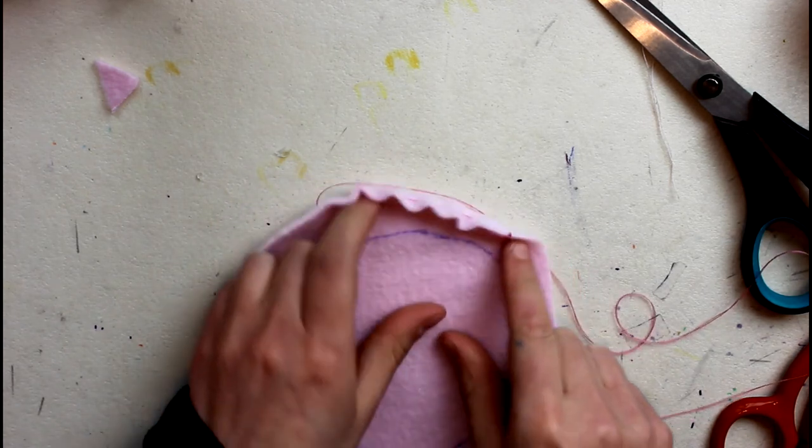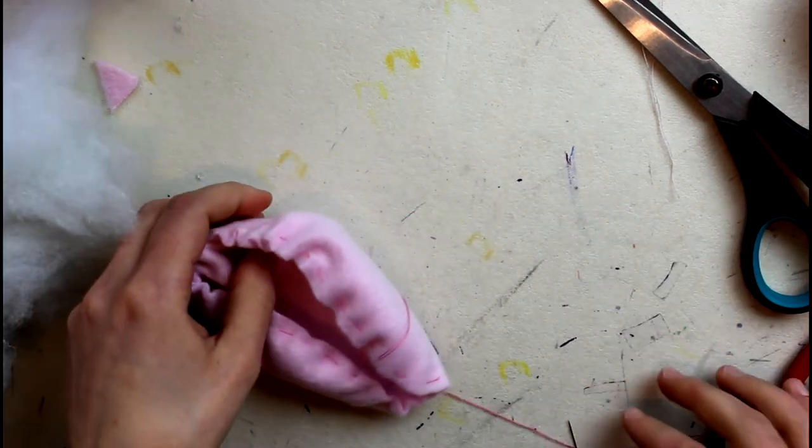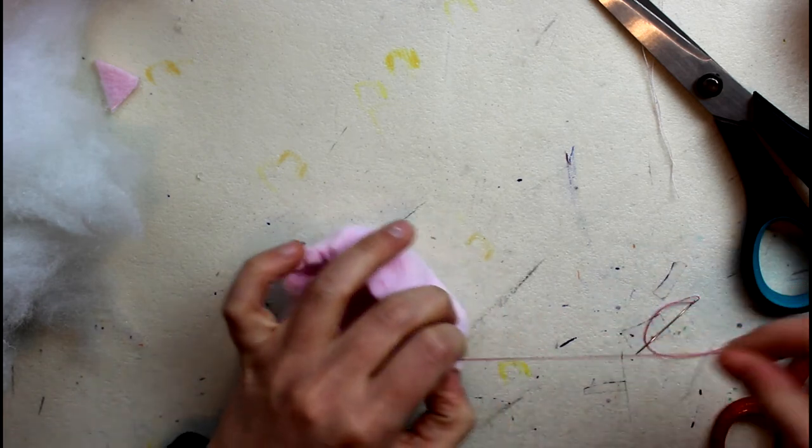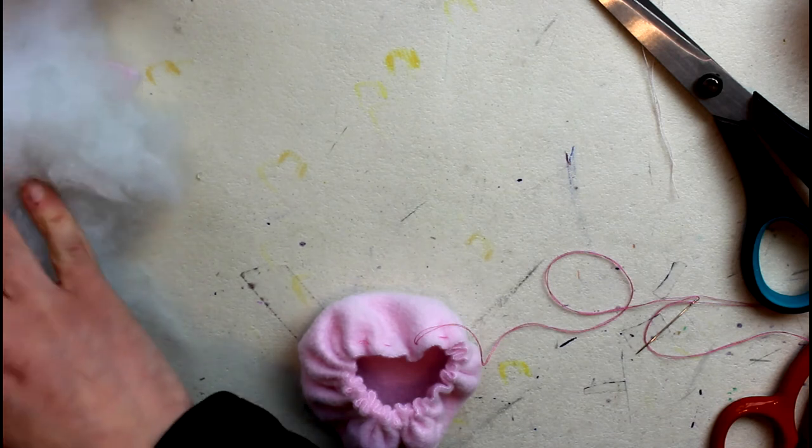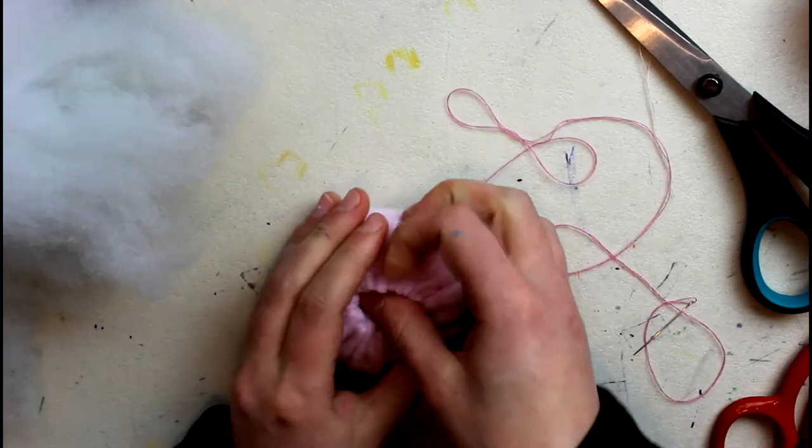Once you've gone all around your circle, start pulling your thread so it's going to start coming all together. This is just how you make a yo-yo flower, it's the same thing. But this time we're going to stuff it so it's going to have a nice volume to it.